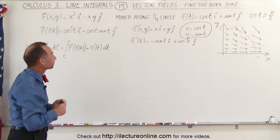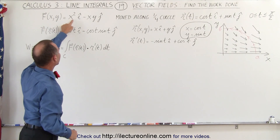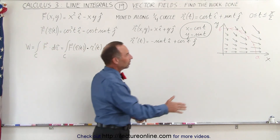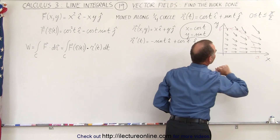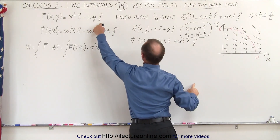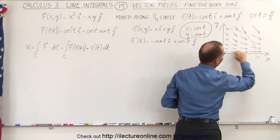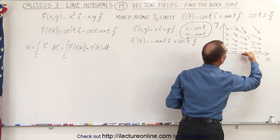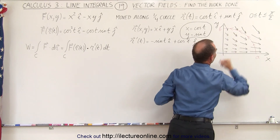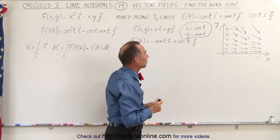We have a vector field defined here. The force is defined as x² in the i direction minus x times y in the j direction. It looks like what the black arrows indicate — the vector field points to the right and downward as we go higher up. The negative xy j-term starts playing an effect, and near the x-axis the field points right, increasing as we go right. As we go up, this j-term turns the direction of the force. We're traveling against the force, so we expect a negative answer.